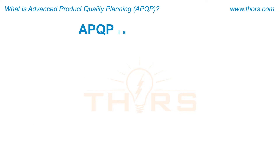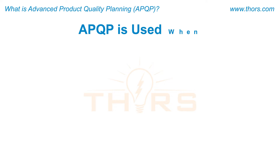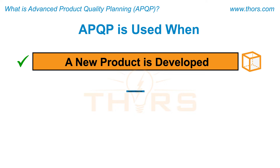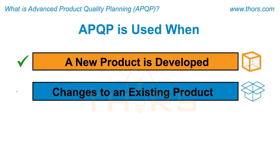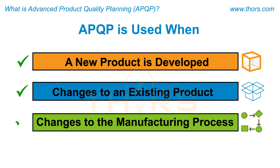APQP is used when a new product is developed, when changes are made to an existing product, or when changes are made to the manufacturing process.